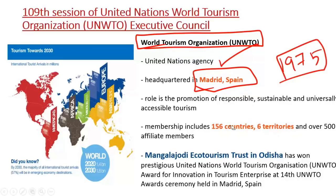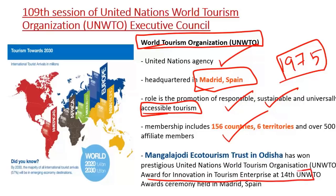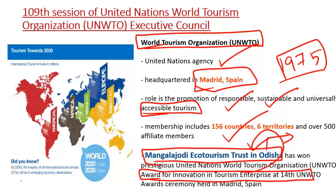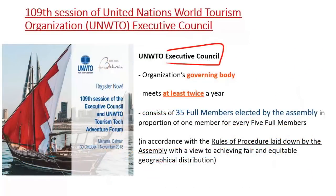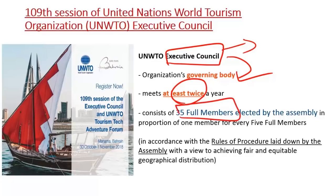The United Nations World Tourism Organization is a UN agency headquartered in Madrid, Spain. It was created in 1975 and currently includes 156 countries. Its main role is to promote responsible, sustainable, and universally accessible tourism. Recently, this organization gave an award for innovation in tourism to an Indian organization called the Mangalajodi Eco Tourism Trust in Odisha, which received a special award for its efforts in the conservation of Lake Chilika. The executive council, the main governing body, meets at least twice a year with 35 full-time members elected by the assembly.